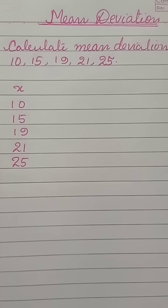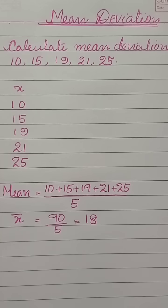For finding mean deviation, first we have to find the mean of these five observations. We got the mean as 90 divided by 5 is equal to 18.